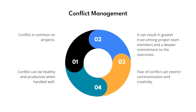It emphasizes that conflict can have both positive and negative impacts on projects. When managed well, conflict can lead to improved collaboration, greater trust among team members, and enhanced commitment to project outcomes. On the other hand, mishandling conflict can result in dissatisfaction, weakened trust, reduced morale, and diminished motivation among project stakeholders.